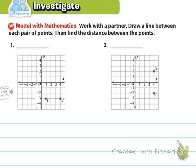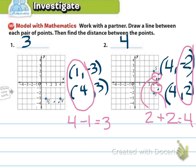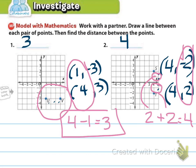Now it says work with a partner to draw a line between each pair of points and find the distance. Since you may be working alone, do just problems one and two on your own, then come back and I'll have the answers. For number one it was three units away, and for number two it was four units away. The reason we can just do subtraction for number two is because they're in the same quadrant — whereas if you have a negative value, you have to figure out the distance from the axis.